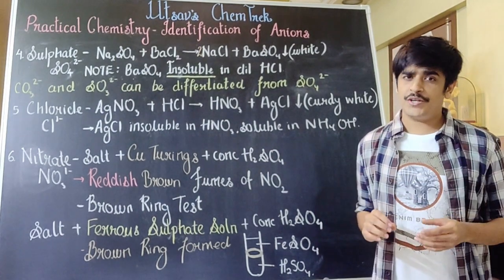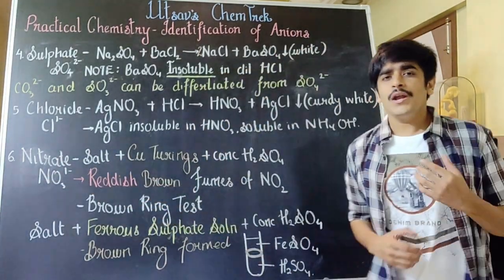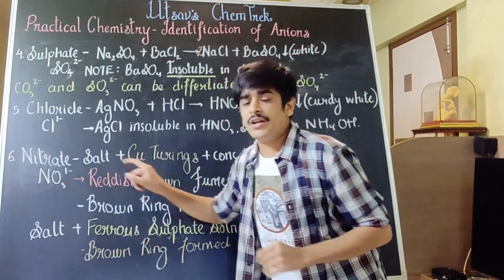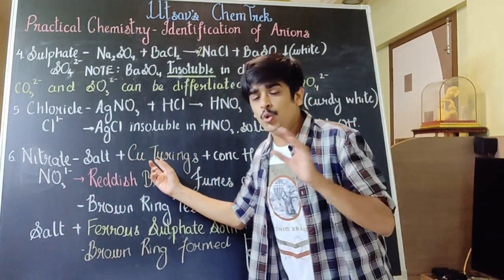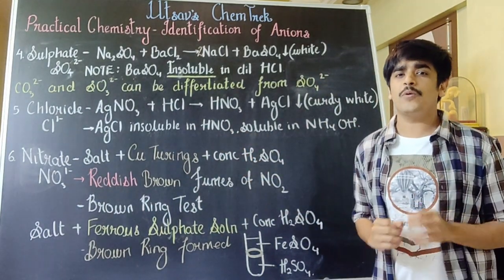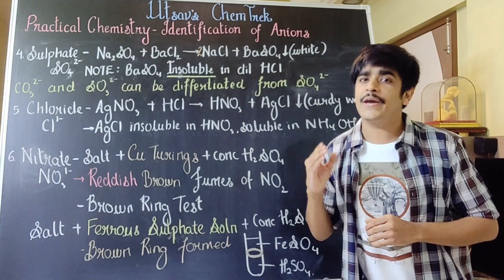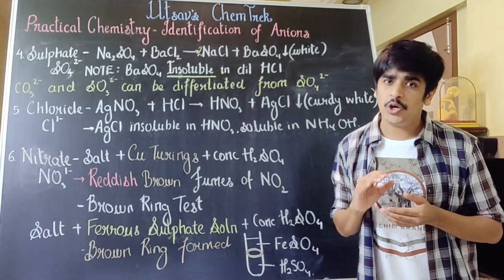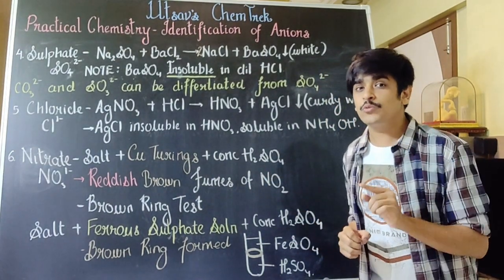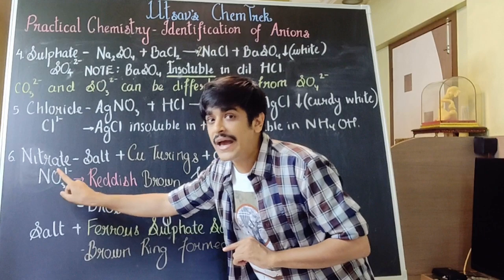The last anion we are identifying in this series is nitrate, given by the formula NO3 1-. To identify the nitrate radical, you are supposed to add turnings of copper to the solid, and then add a few drops of extremely concentrated sulfuric acid H2SO4. The moment you do this, you are going to get reddish brown fumes of nitrogen dioxide. It is a gas which is capable of turning potassium iodide paper brown. So if you get reddish brown fumes of NO2 and those fumes do turn KI paper brown, that confirms the nitrate anion.